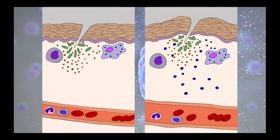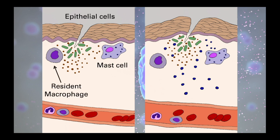If we revisit our scenario where the outer barriers have been breached, then cells in the surrounding areas start producing cytokines — that is the epithelial cells, the resident mast cells and macrophages, all contributing to the production of cytokines. There are many different cytokines being produced, and the precise cocktail will depend on the eliciting agent to ensure an appropriate immune response. Here we're just going to focus on a few of the cytokines, particularly those that can be released by tissue-resident macrophages, which can have local and systemic effects.